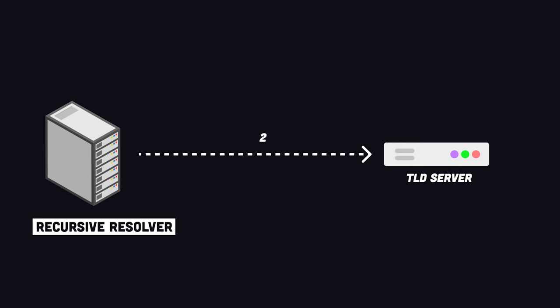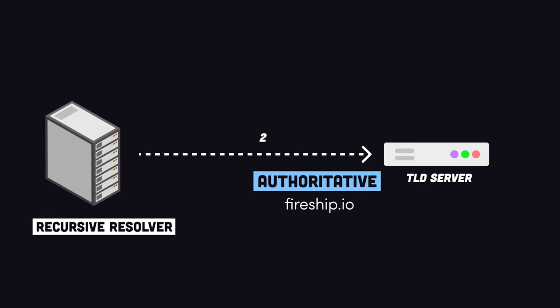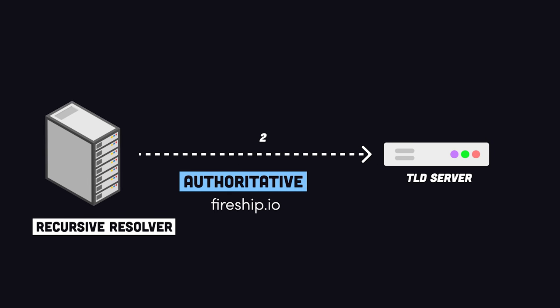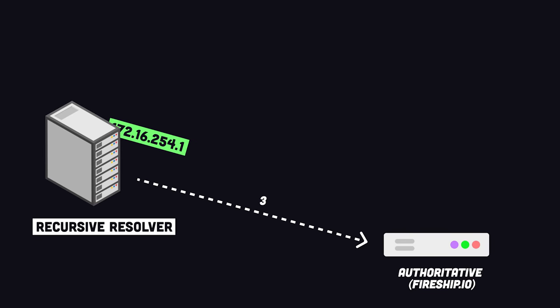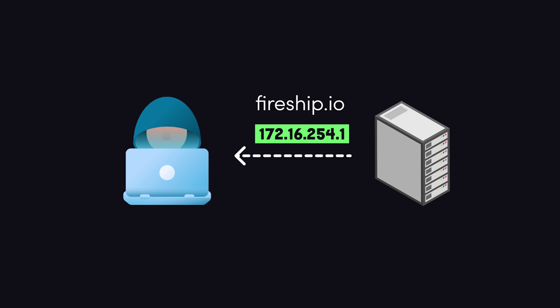The resolver makes a request there, which will respond with the IP address of the authoritative name server. That's the final source of truth that contains the requested website's IP address. That gets sent back down to the client and is cached for future use.